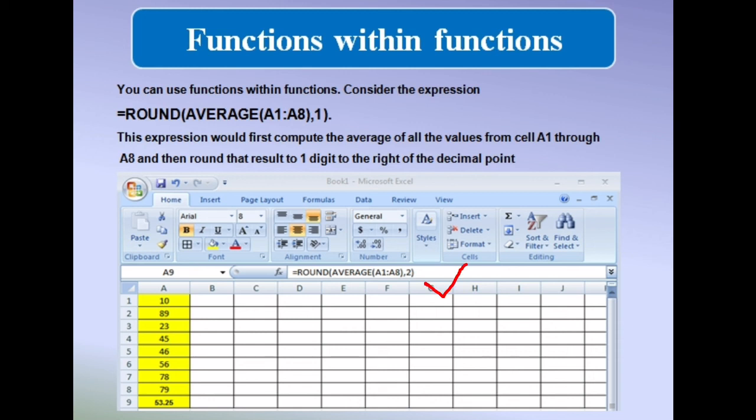When we are using this expression, it would first compute the average of all the values from cell A1 through A8, and then round the result to 1 digit to the right of the decimal point.